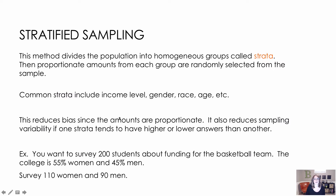Stratified sampling is still random, but it divides the population into groups called strata. The most important part is that we use proportionate amounts from each group that are randomly selected. For instance, with 20 males and 20 females, if I wanted a sample of 20 people from that class, I would choose 10 males and 10 females — stratifying based on gender.